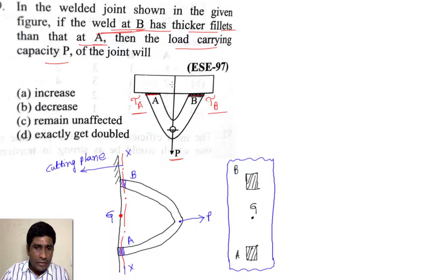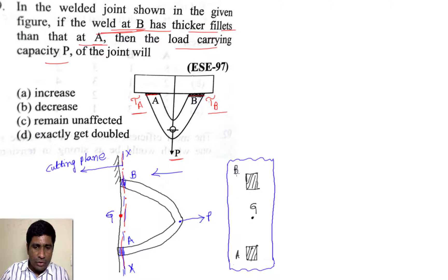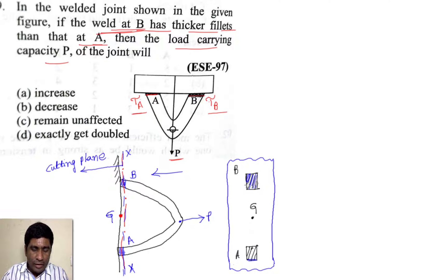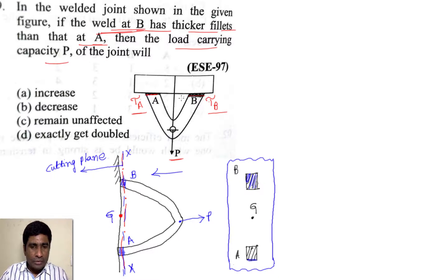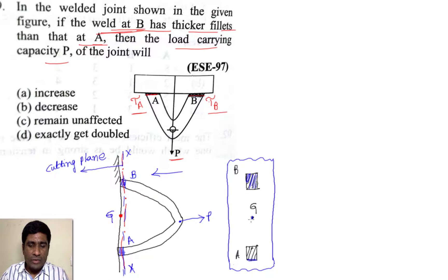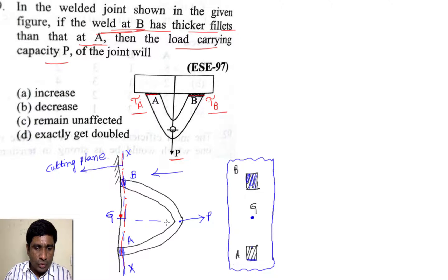In the general case, if I redraw the diagram and cut the welded joint section using a cutting plane, the cross-sections at B and A become visible. Initially, if points A and B are welded with the same thickness, the cross-sectional areas are equal and the center of gravity G lies exactly midway between the two sections. In this case, P passes through point G.